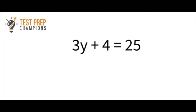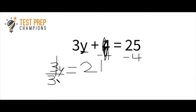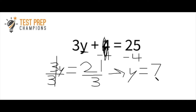The next question: 3y plus 4 equals 25. This is a little different. We always want to solve for the variable. First, we get rid of the 4 before dealing with the 3. Since it's plus 4, we subtract 4 from both sides, leaving 3y equals 21. Since 3y is the same as 3 times y, the opposite of multiplication is division. We divide by 3 on both sides — 3 divided by 3 cancels out, and 21 divided by 3 is 7. So y equals 7.